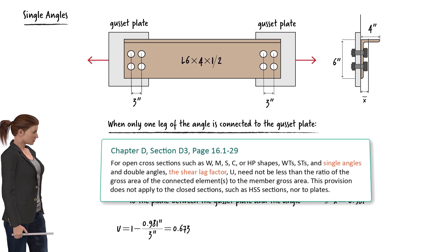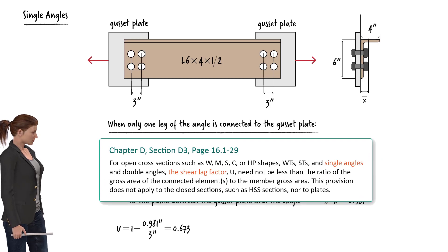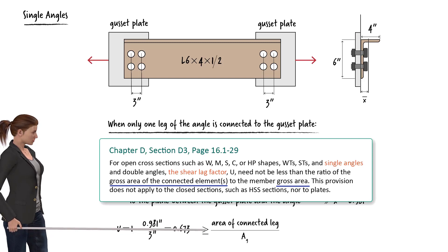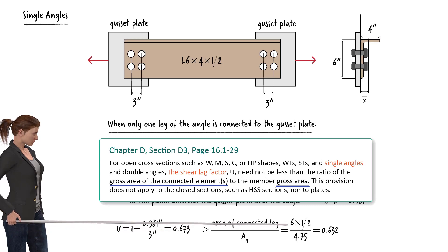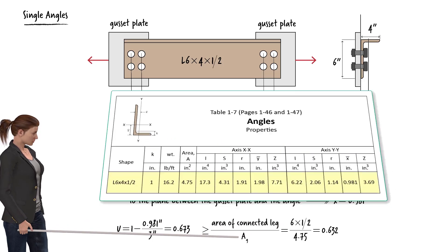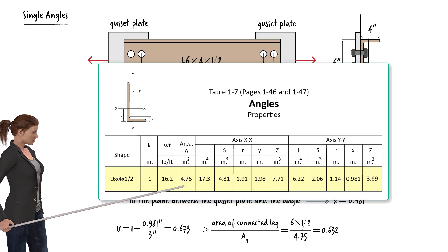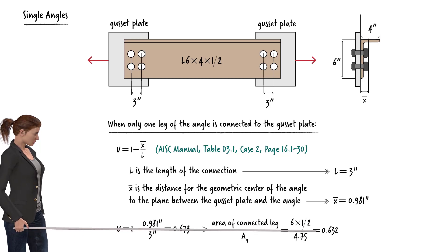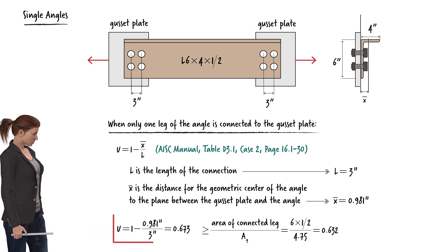Furthermore, Chapter D of the AISC manual provides another provision: the shear lag factor need not be less than the ratio of the gross area of the connected leg to the member's gross area. That is, U can be greater than or equal to this ratio. In this case, the gross area of the connected leg equals 6 inches × 1/2 inch = 3 square inches. The gross area of the angle from Table 1.7 equals 4.75 square inches, giving a ratio of 0.632. We can use 0.632 only if the calculated value from the formula is less than 0.632. In this case, the formula gives U = 0.673, so we use 0.673.